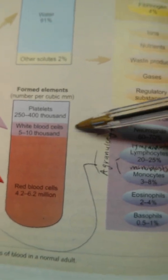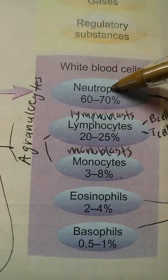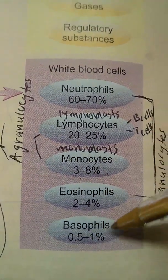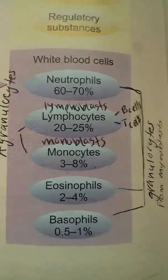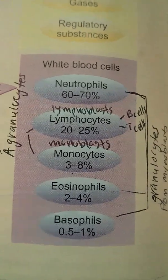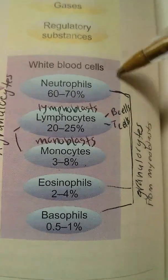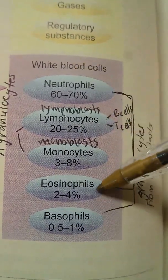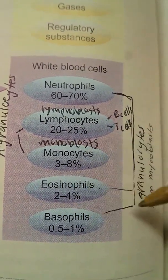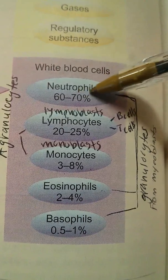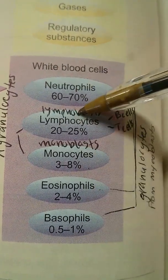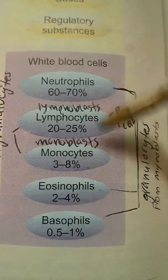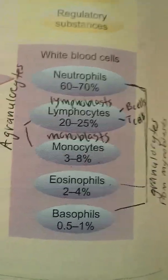There are five types of white blood cells: neutrophils, lymphocytes, monocytes, eosinophils, and basophils. The neutrophils, eosinophils, and basophils are all considered one class — they all end with '-phil.' The lymphocytes and the monocytes are considered a different class because they both end with '-cyte.' We'll talk about that in more detail later.